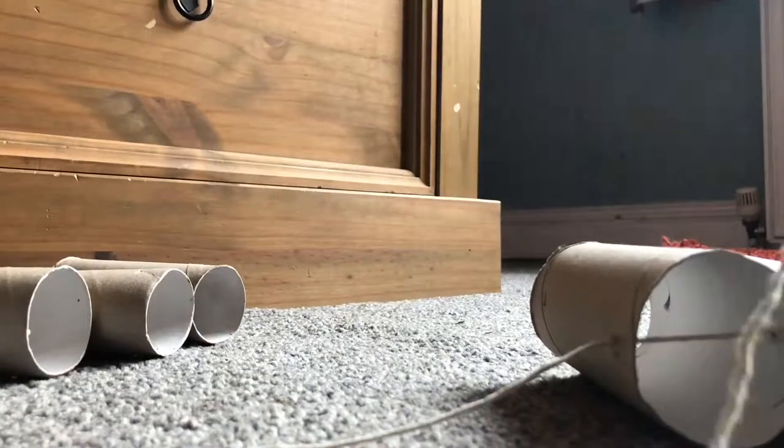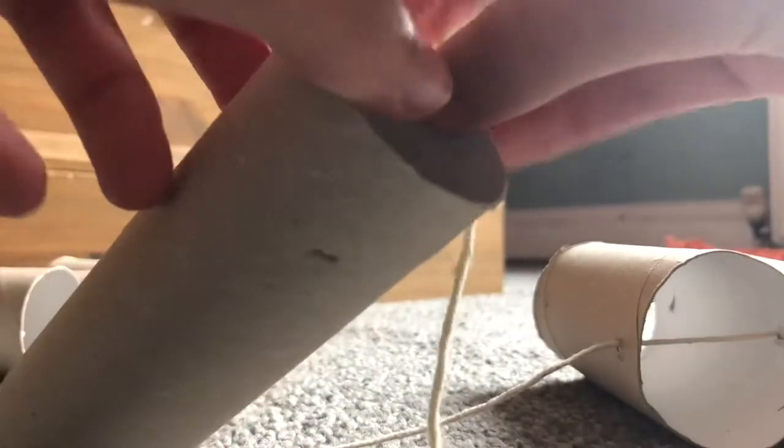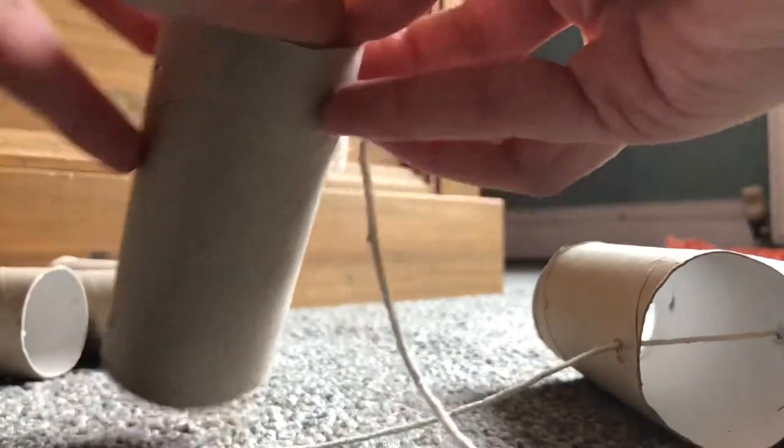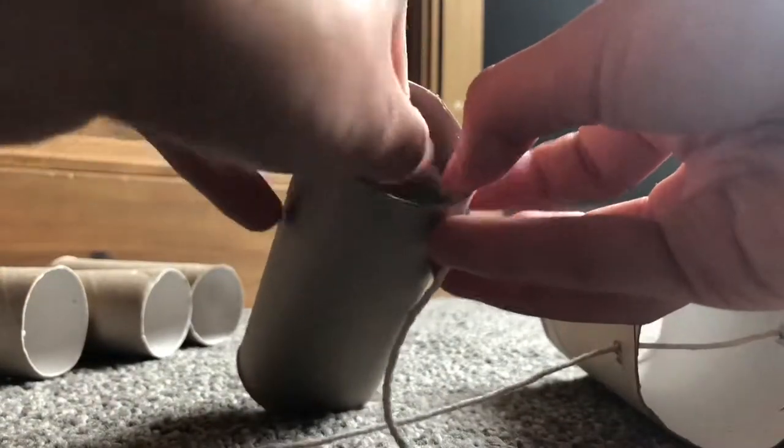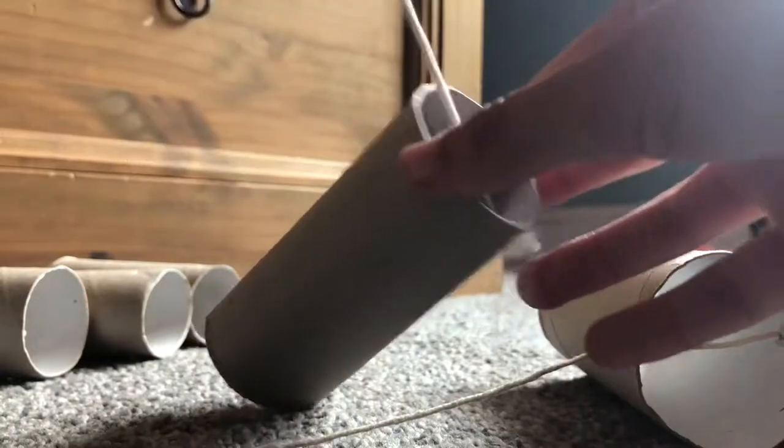You're also going to need two pieces of string, one for each side of the holes. For each toilet roll tube, you put the string through two holes, and you do that again for the other piece of string as you can see here.